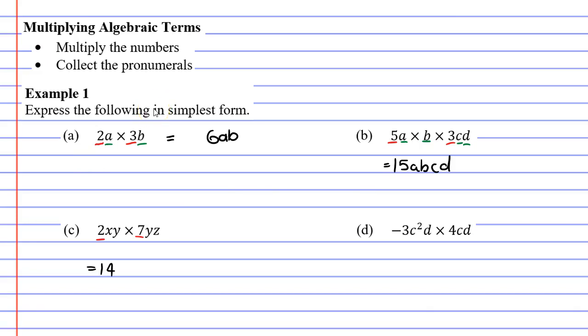Let's now look at our pronumerals. We have an X, a Y, another Y, and a Z. So we had one X but we had two Y's, so we need to do Y to the power of 2, and then we had one Z. So we get 14XY²Z.